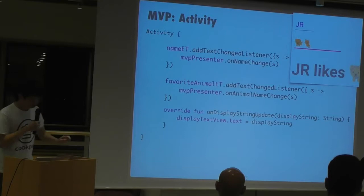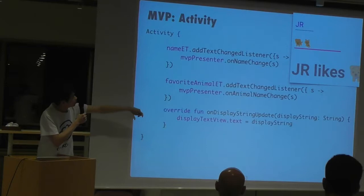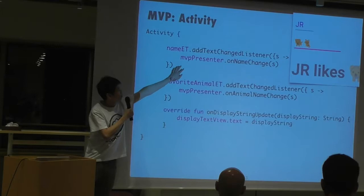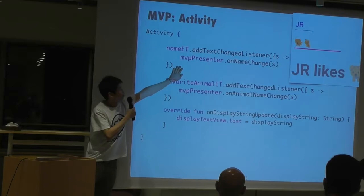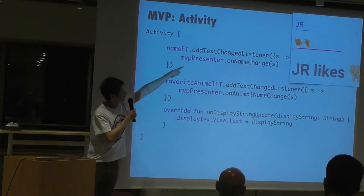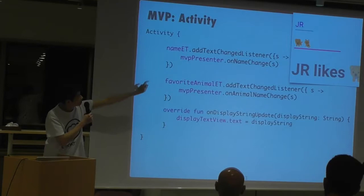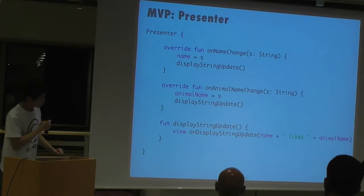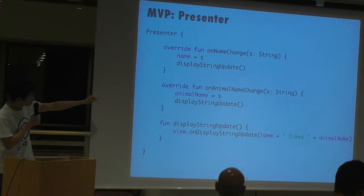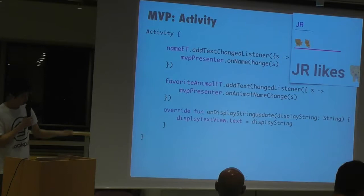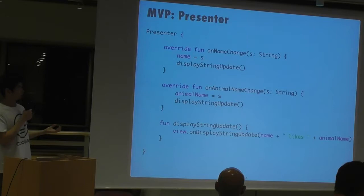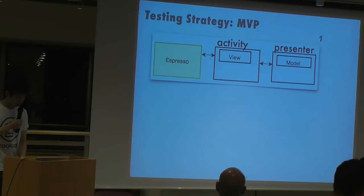Let's take a look at MVP. In MVP, notice that previously I was calling another method directly — every time I stored the name I called update. But now I shove everything into the presenter, so I only call the presenter's onNameChange. In the presenter we are doing the same thing as before, but now my activity is more clean and shorter. You might argue you need this extra presenter, and you're writing even more code — but you'll see the advantage when we discuss testing strategy.